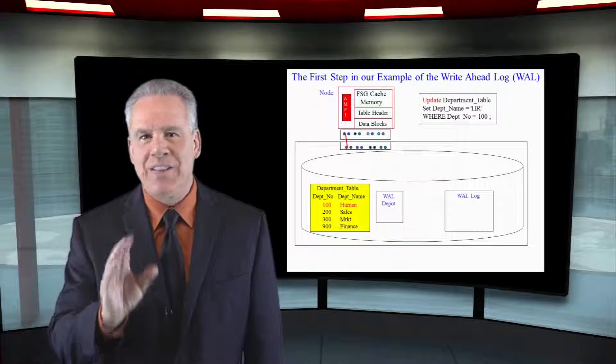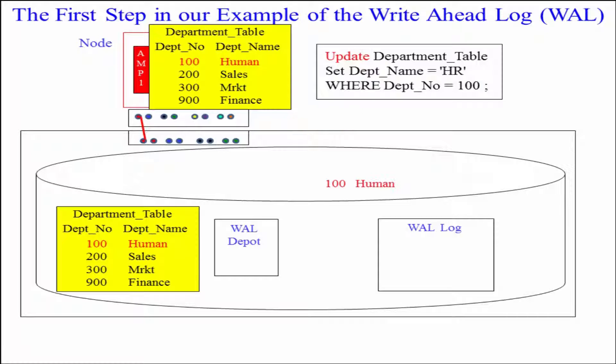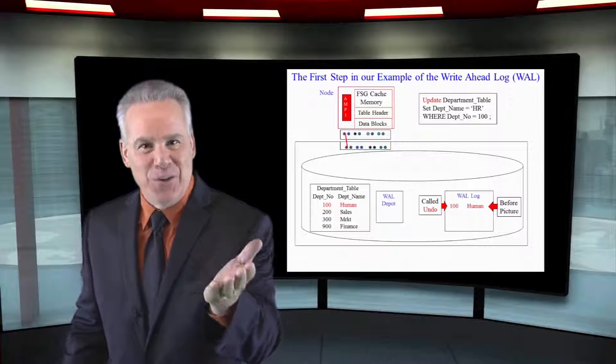The first thing that the amp's going to do is bring that block into memory and then it's going to write Department 100 human and it's going to write that back down to its disk in the wall log. It's got a before image of this row before it changes. This is called the undo log.